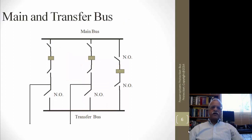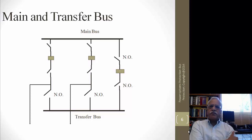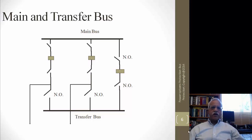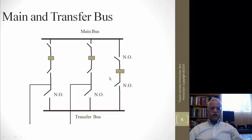In the main and transfer bus arrangement, you replace the second breaker in the double bus arrangement with a common breaker called the bus transfer breaker. All equipment is connected to the bus through a breaker and there is a normally open switch to a transfer bus. In case of a problem, you connect the line to the transfer bus and use the transfer bus breaker for isolating that particular equipment.